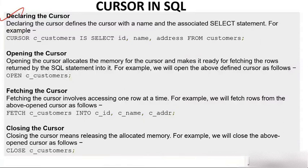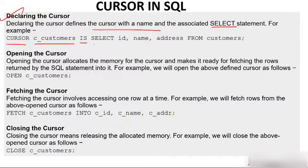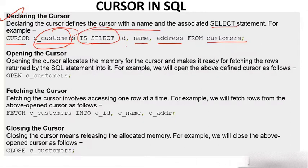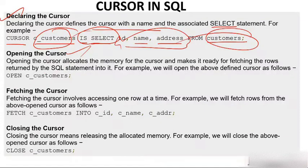Declaring a cursor defines the cursor with a name and an associated SELECT statement. For example: CURSOR c_customer IS SELECT id, name, address FROM customers. Opening a cursor allocates the memory for the cursor and makes it ready for fetching rows returned by the SQL statement. We open the above defined cursor as: OPEN c_customer.